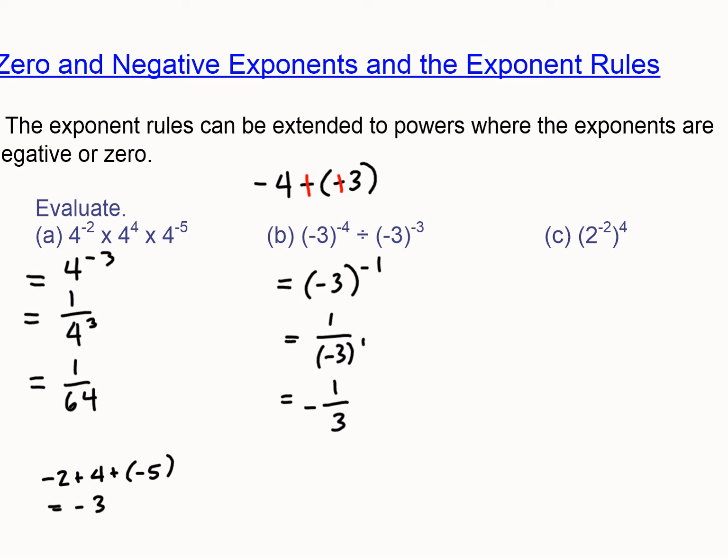So the last one is the power to a power rule, and with that, we multiply the exponents. And to evaluate, again, how do we evaluate? We use the reciprocal of the base, and that makes our exponent positive.